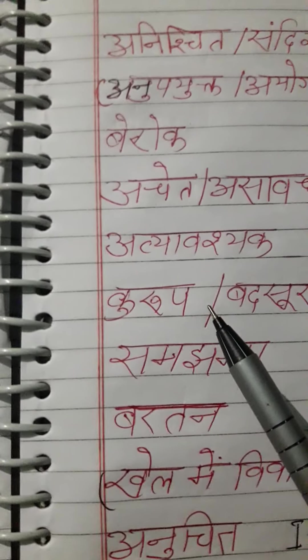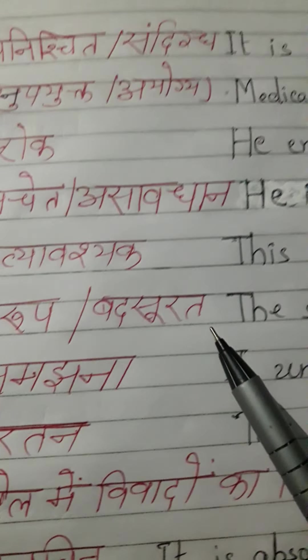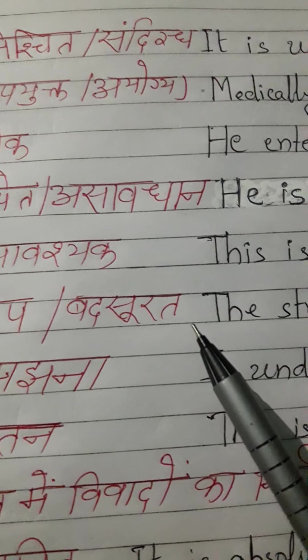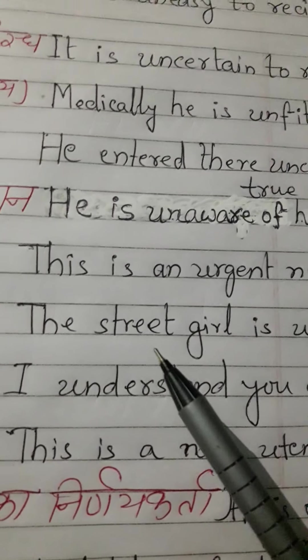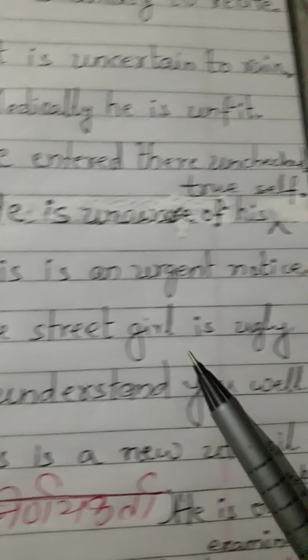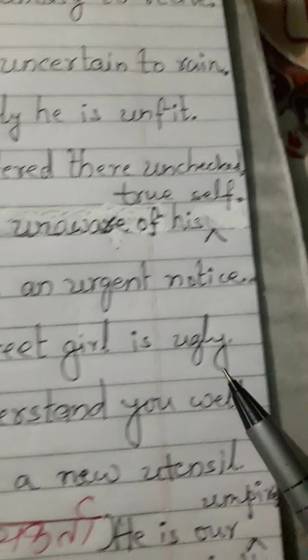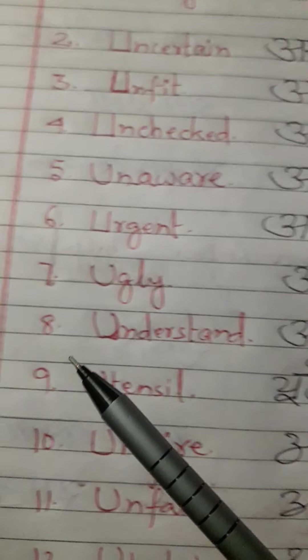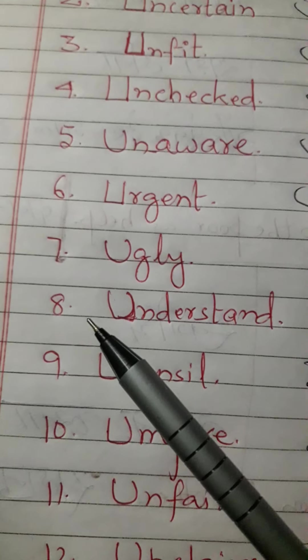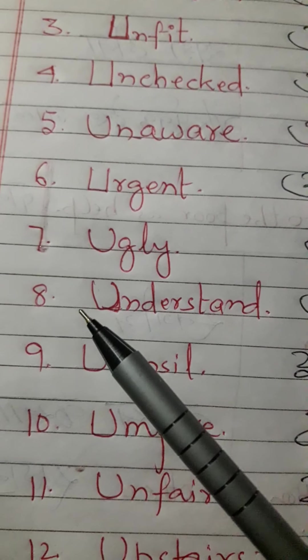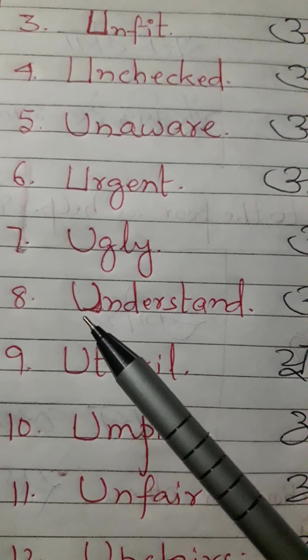Next word is ugly. Hindi meaning: 'kurup' or 'badsurath'. Used in sentences: the street girl is ugly.